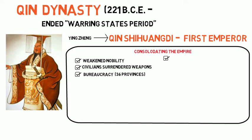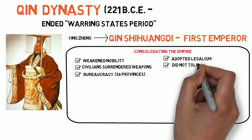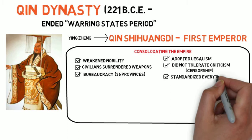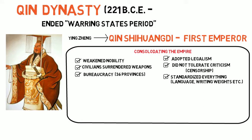To govern the empire, Qin adopted the philosophy of legalism, which provided for strict laws and harsh punishments for anyone who broke them. No criticism of the government was tolerated, and Qin ordered the burning of any books that did not deal with practical matters such as agriculture or technology. There is a rumor that he also had 450 Confucian scholars buried alive. Between burning books and burying teachers, Qin began to standardize Chinese writing, language, weights, measurements, and currency. This type of standardization is important in unifying an empire.